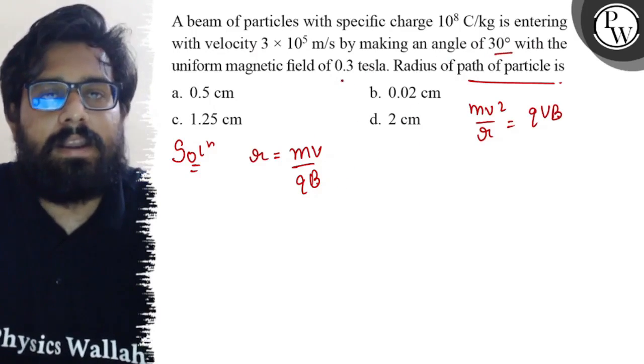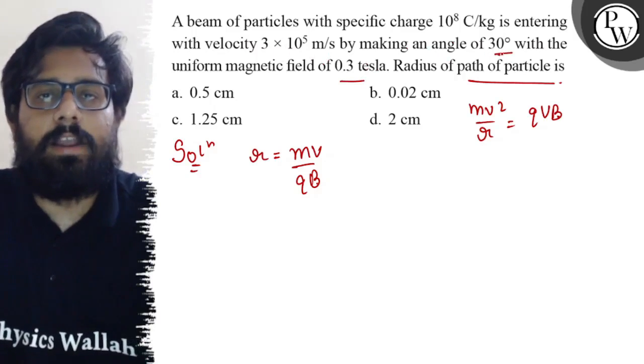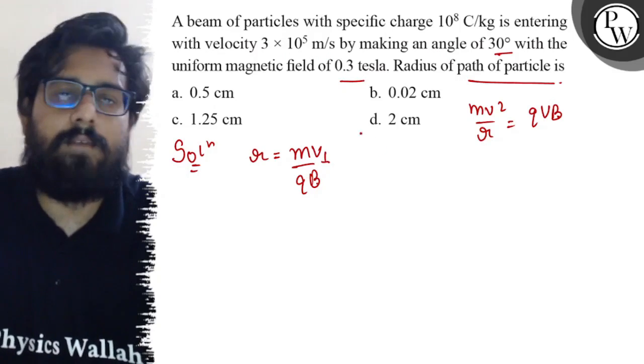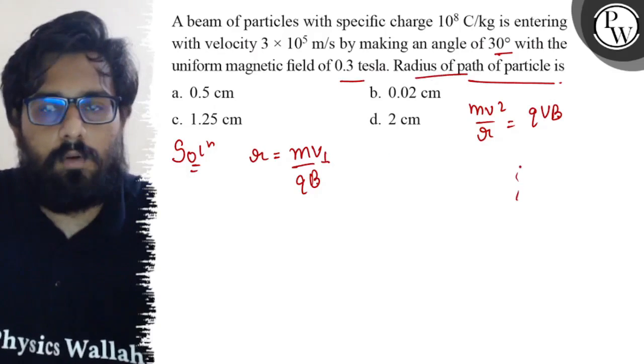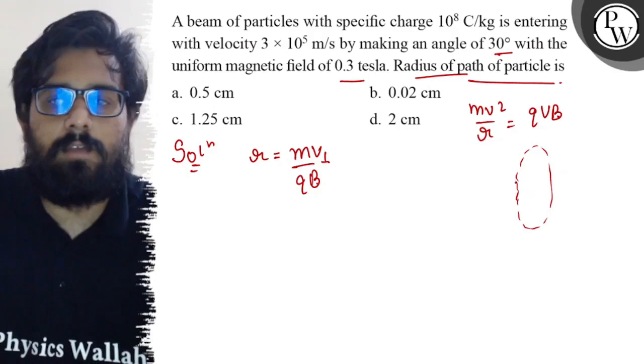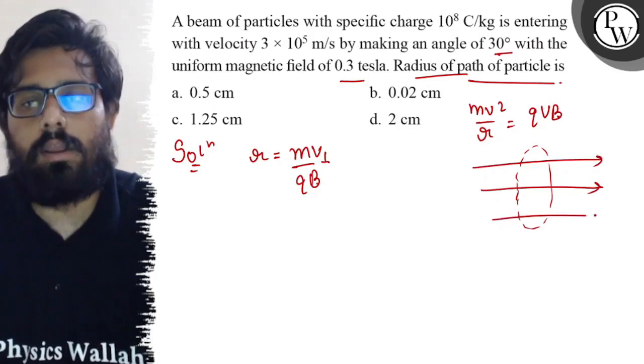The velocity is making an angle of 30 degrees with the magnetic field, so for mv perpendicular, I have to consider the perpendicular component. A radius will only form when it follows a circular path. In a magnetic field, a circular path only happens when the velocity enters perpendicular to the field.